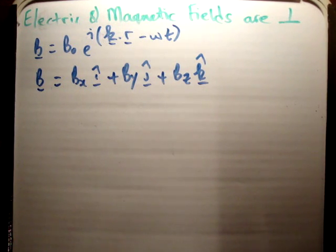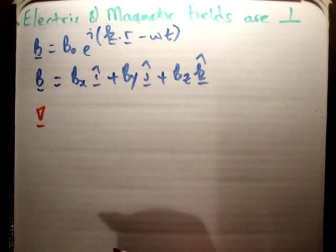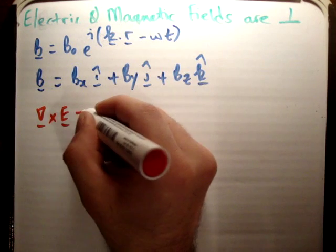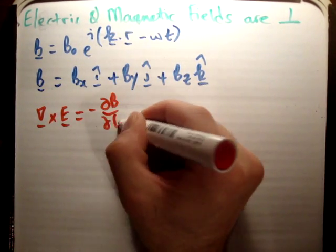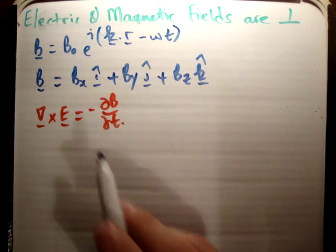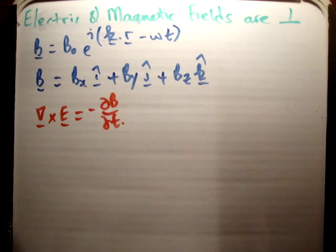Now we need to look at Faraday's law, which states that the del operator cross-producted with the electric field is equal to negative ∂B/∂t. This means that the negative time rate of change of the magnetic field is equivalent to the curl of the electric field.